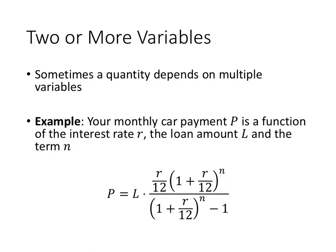In this case, we've got a monthly car payment, which is a function of the interest rate, the loan amount, and the term. So we've got a fairly complicated-looking formula, but notice that it has three variables in it: the L, the R, and the N.